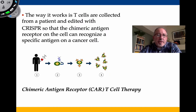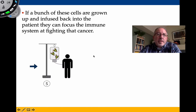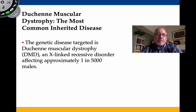The way it works is T-cells are first collected from the patient and then edited using CRISPR to create the chimeric antigen receptor so the cell would recognize the antigen on the cancer cell. Those cells are then grown up and infused back into the patient, where the altered T-cells can attack and fight the cancer specifically.